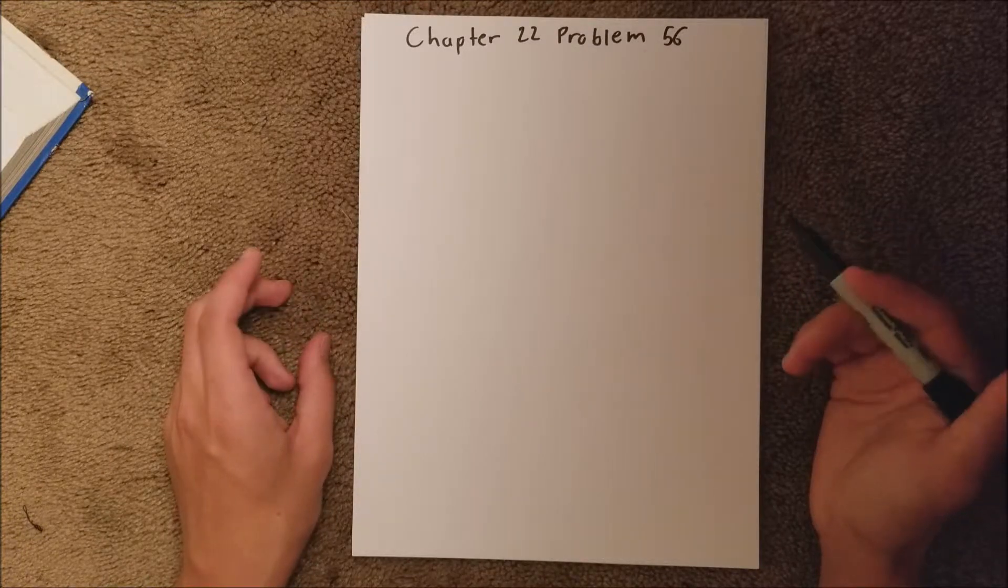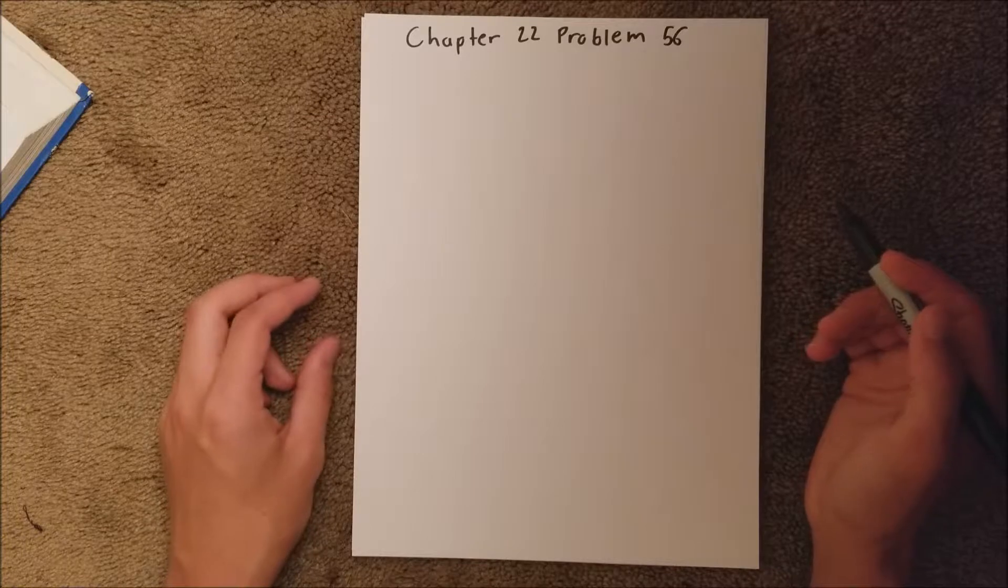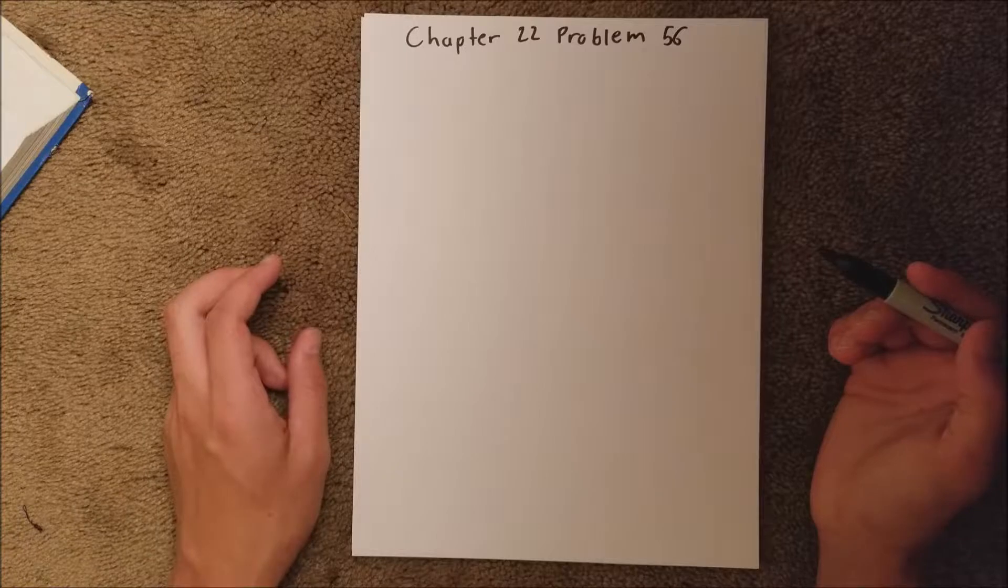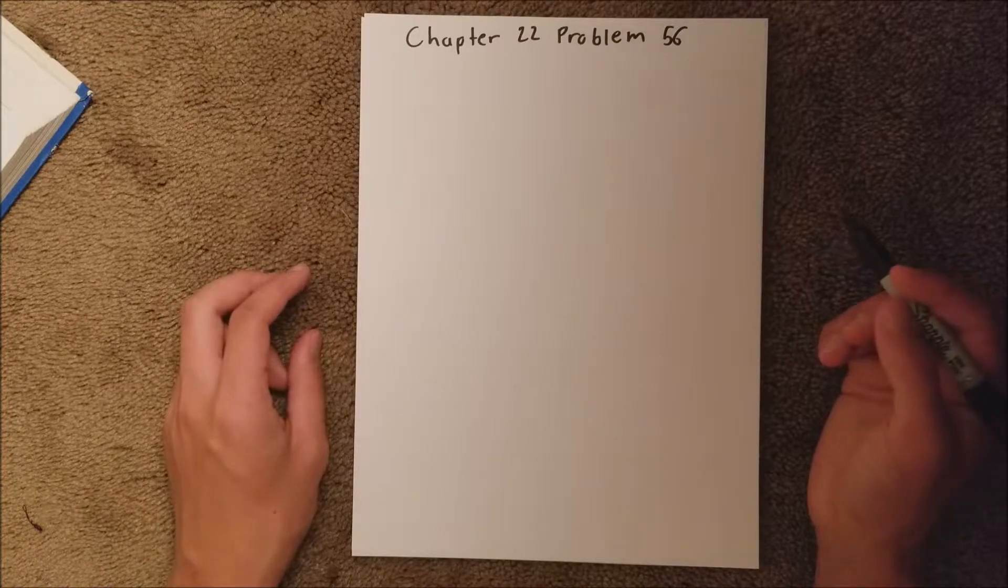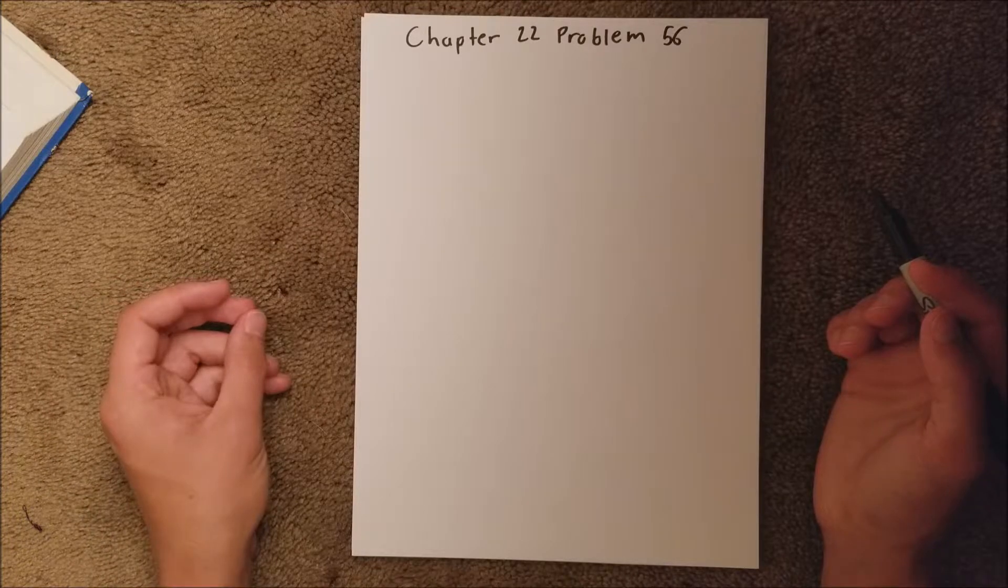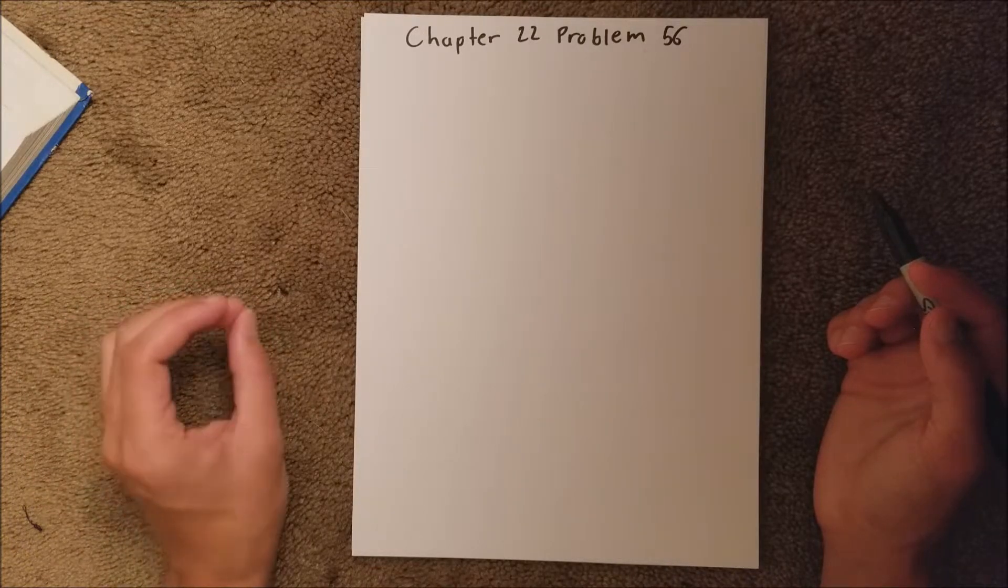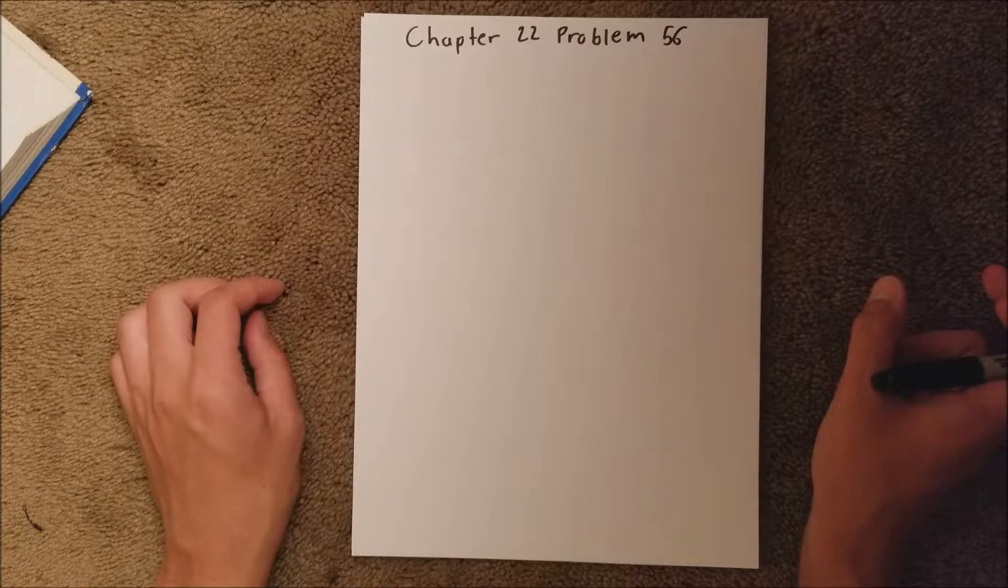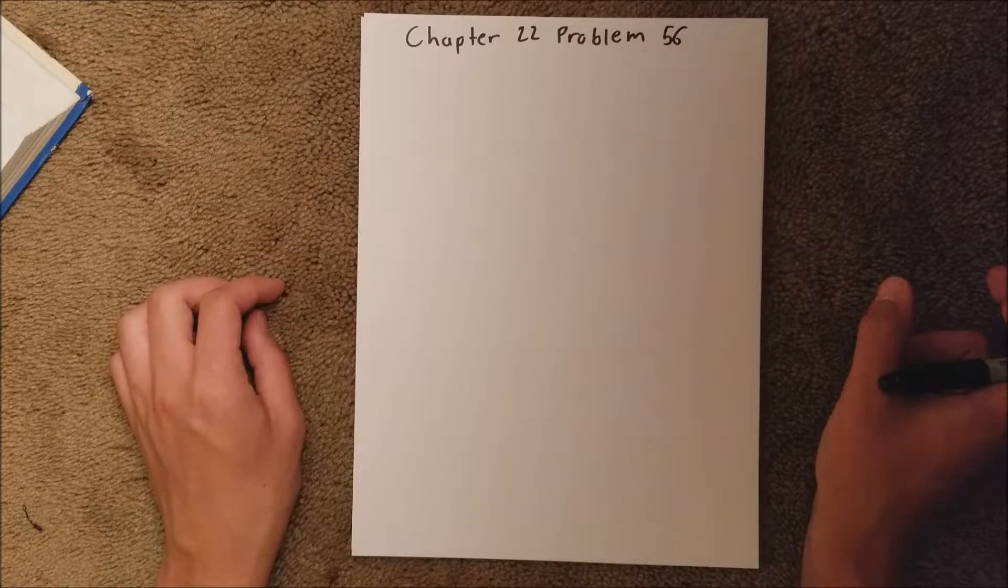In Problem 56, it talks about an electric dipole that has two charges, one positive 2e and one negative 2e, and we're given the distance between them.